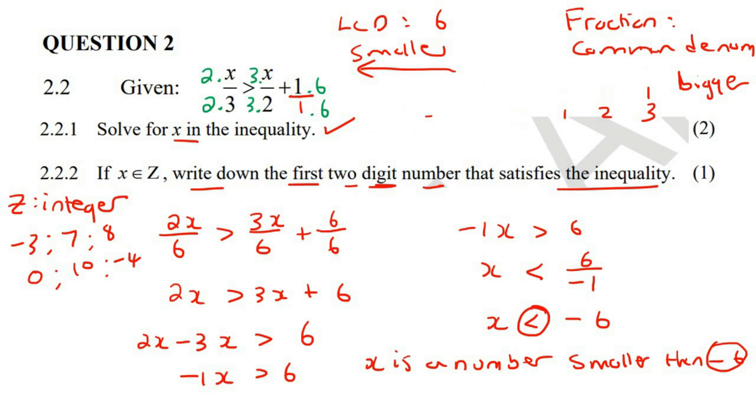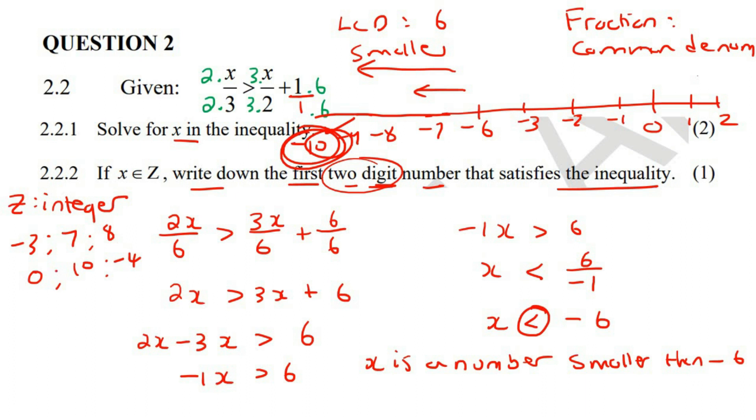So let me just draw this in a better place. So if that's 0, that's 1, that's 2. Then negative 1, negative 2, negative 3. I'm going to skip a few and then just go negative 6. So we need to go even smaller than negative 6. So that would be negative 7, negative 8, negative 9. And they said that it must be a two-digit number. So that would be negative 10. So it says x is a number smaller than negative 6, and it must be the first two-digit number that we see. So it would be negative 10.